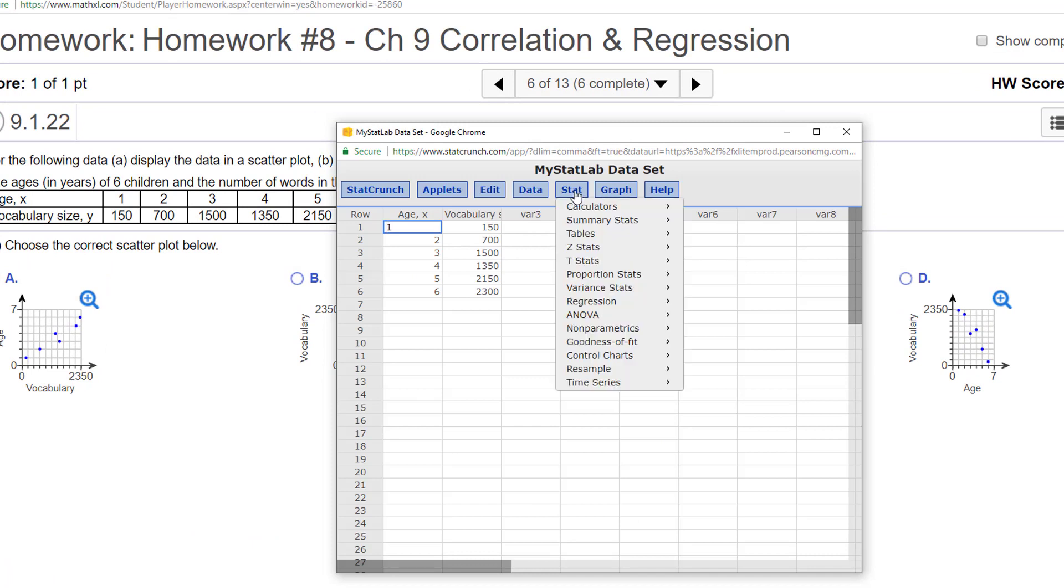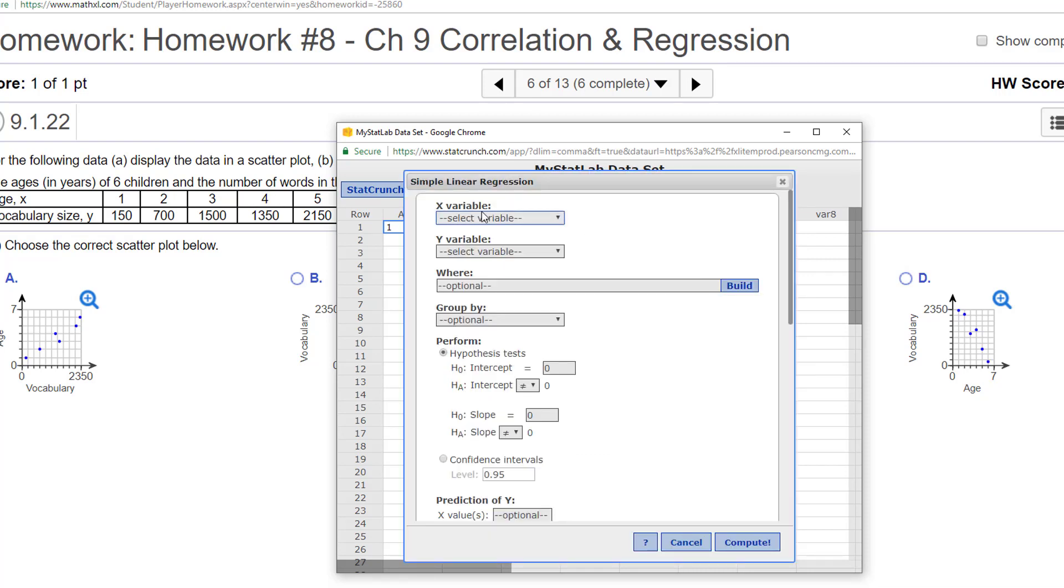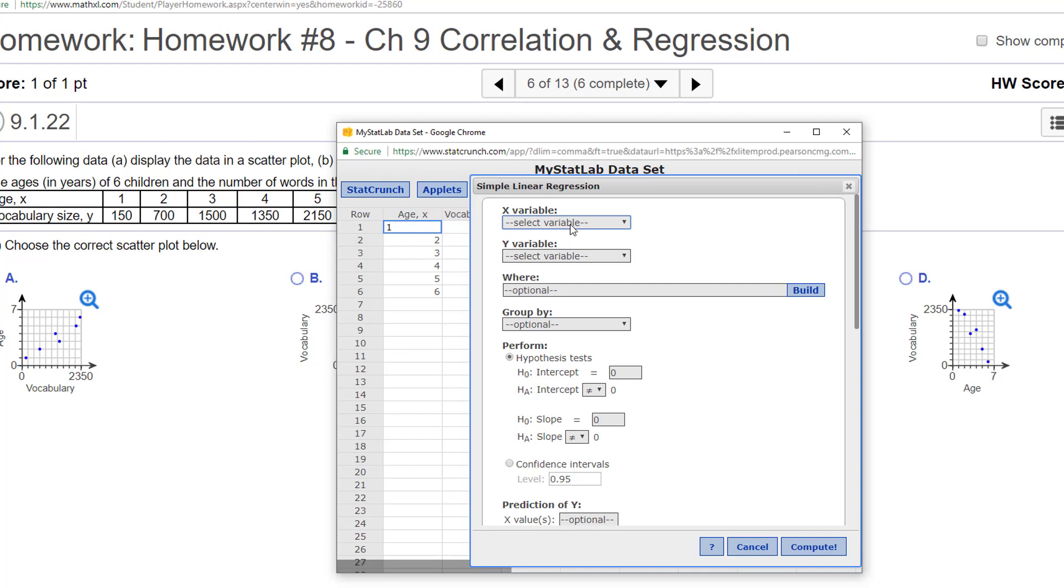Go to Stat, go to Regression, this is Simple Linear, and select the X variable which is Age, select the Y variable which is Vocabulary Size.